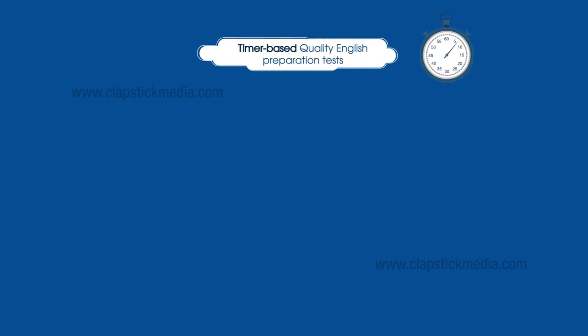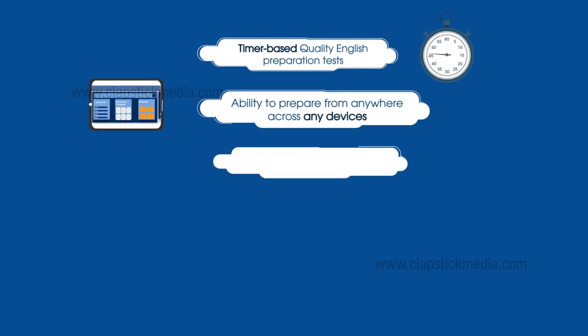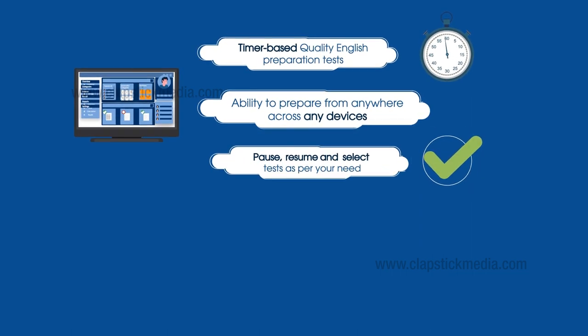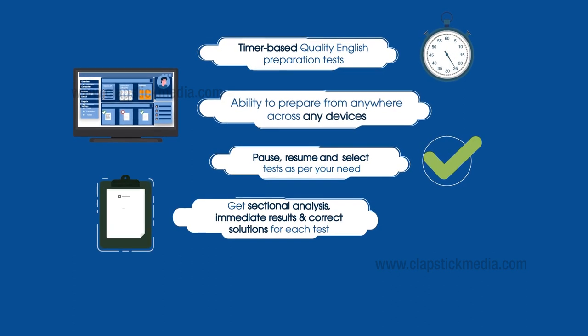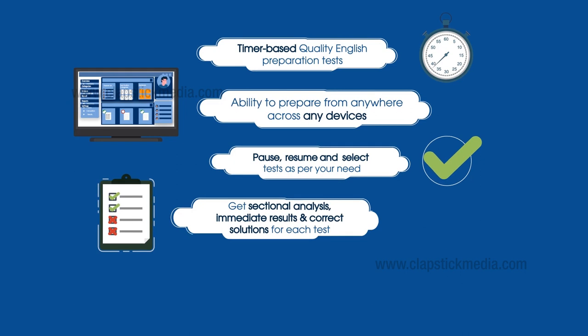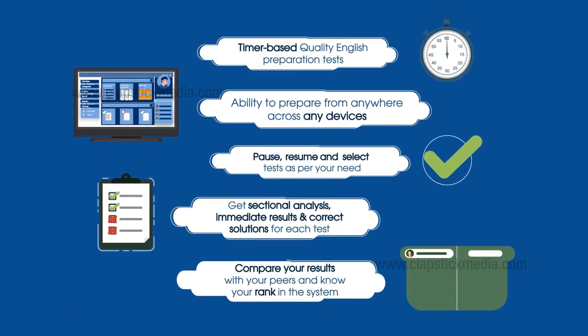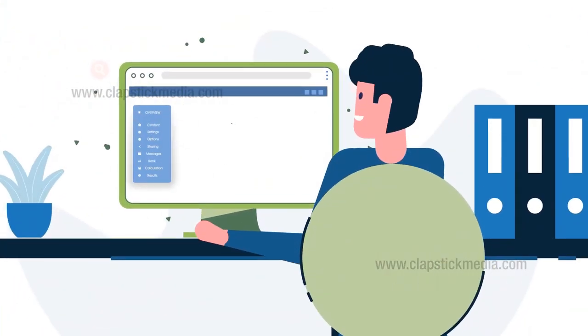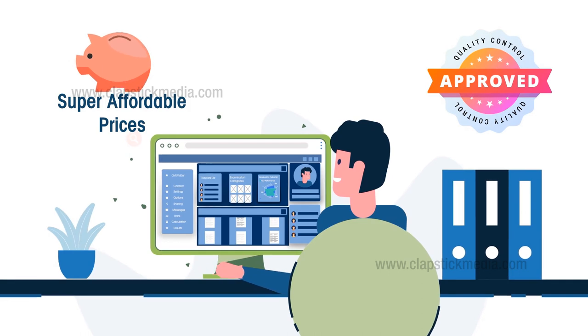In RAS Zone, you get timer-based quality English preparation tests, and the ability to prepare from anywhere across any device. Pause, resume and select tests as per your need. Get sectional analysis, immediate results and correct solutions for each test. Compare your results with your peers and know your rank in the system. Best of all, these come at super affordable prices and of much higher quality.